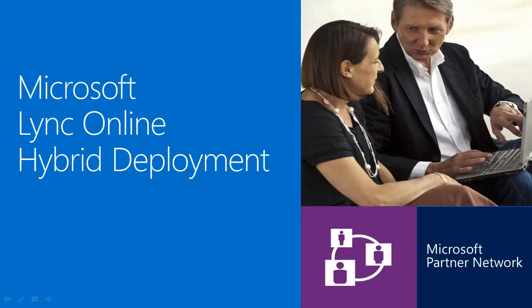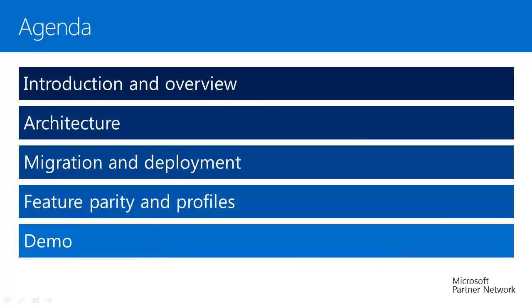Let's have a look at the agenda. The first topic is Introduction and Overview, where we discuss about Lync Online Hybrid Product Offering, Objective of Hybrid Deployment, which are the supported deployment models, and interoperability with other technologies. The second topic is Lync Hybrid Architecture, in which we will discuss about various scenarios associated with the Lync Hybrid Model, and also look at the key elements required on-premise and online for setting up a hybrid deployment. The third topic is Migration and Deployment, in which we will discuss about prerequisites required for setting up a hybrid deployment, various steps involved in moving a user from on-premise to online, and hybrid deployment workflow in detail.